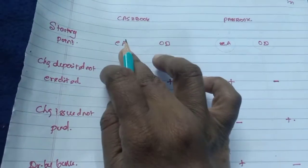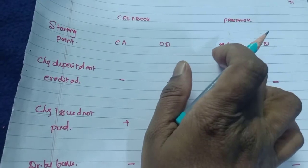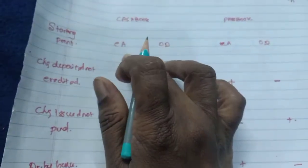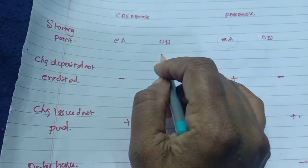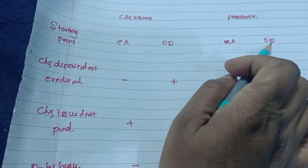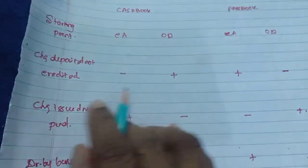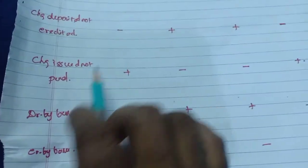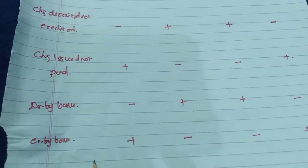The cashbook balance is in contra to the passbook. If passbook balance is positive, the cashbook current account balance is negative. For the OD account, if the bank passbook shows negative, the cashbook will show a positive balance. The formula involves: check deposited but not credited, check issued not paid, debit by bank, and credit by bank — with corresponding plus and minus signs.